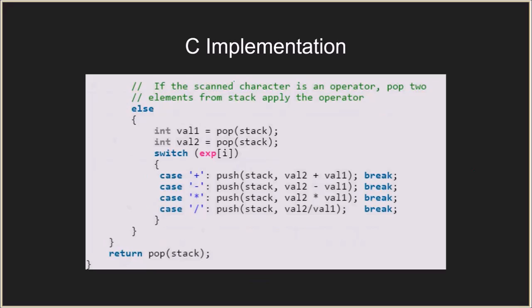If the scanned character is an operator, we pop two elements — val1 and val2 — from the stack. We use a switch case on the operator: if plus, add the values and push; if minus, subtract and push; similarly for multiply and divide. We continue until the whole expression is traversed. At the end, only one element remains, and we return it by doing a final pop.